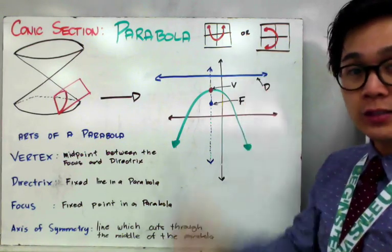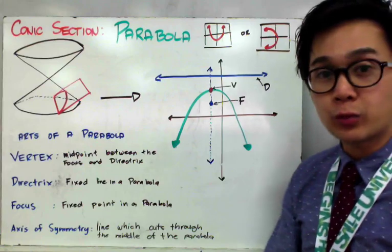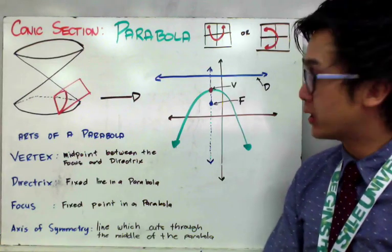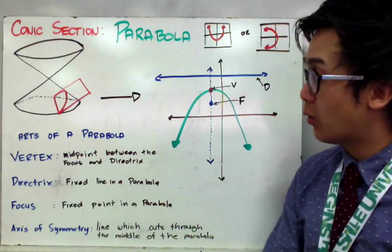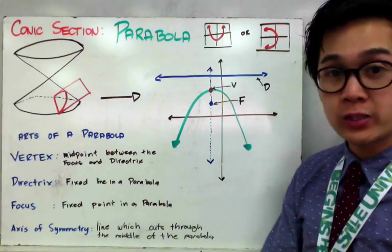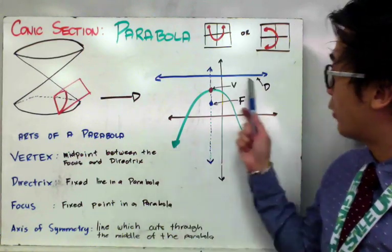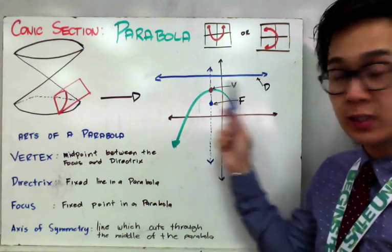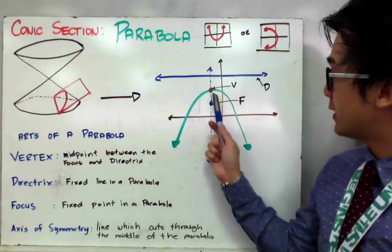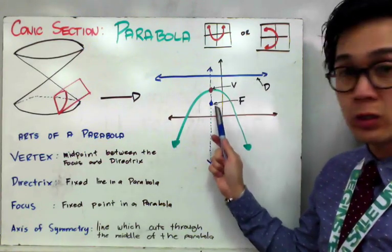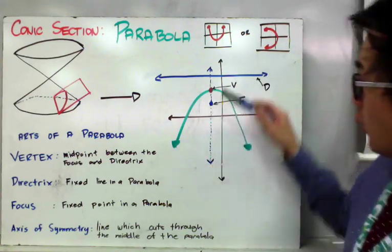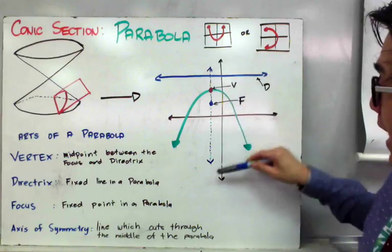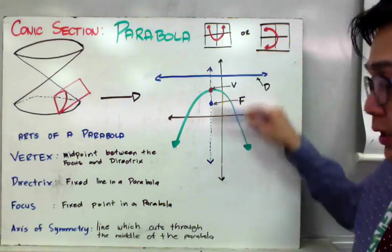The parts of the parabola that we need to know to understand parabola will be our directrix, which is a line. The vertex and the focus, and also the axis of symmetry.